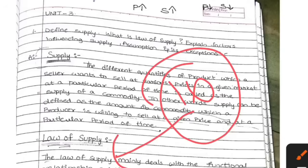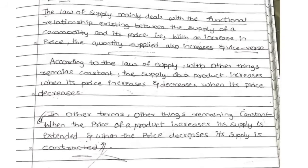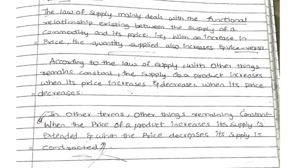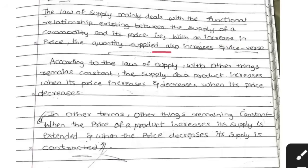For example, if a product price is 10 rupees, how much is the seller willing to sell to the customer? That is the law of supply. How you need to remember this: when price increases, supply also increases; when price decreases, supply also decreases. The law of supply deals with the functional relationship between supply and a commodity — when price increases quantity supplied also increases, when price decreases supply also decreases.